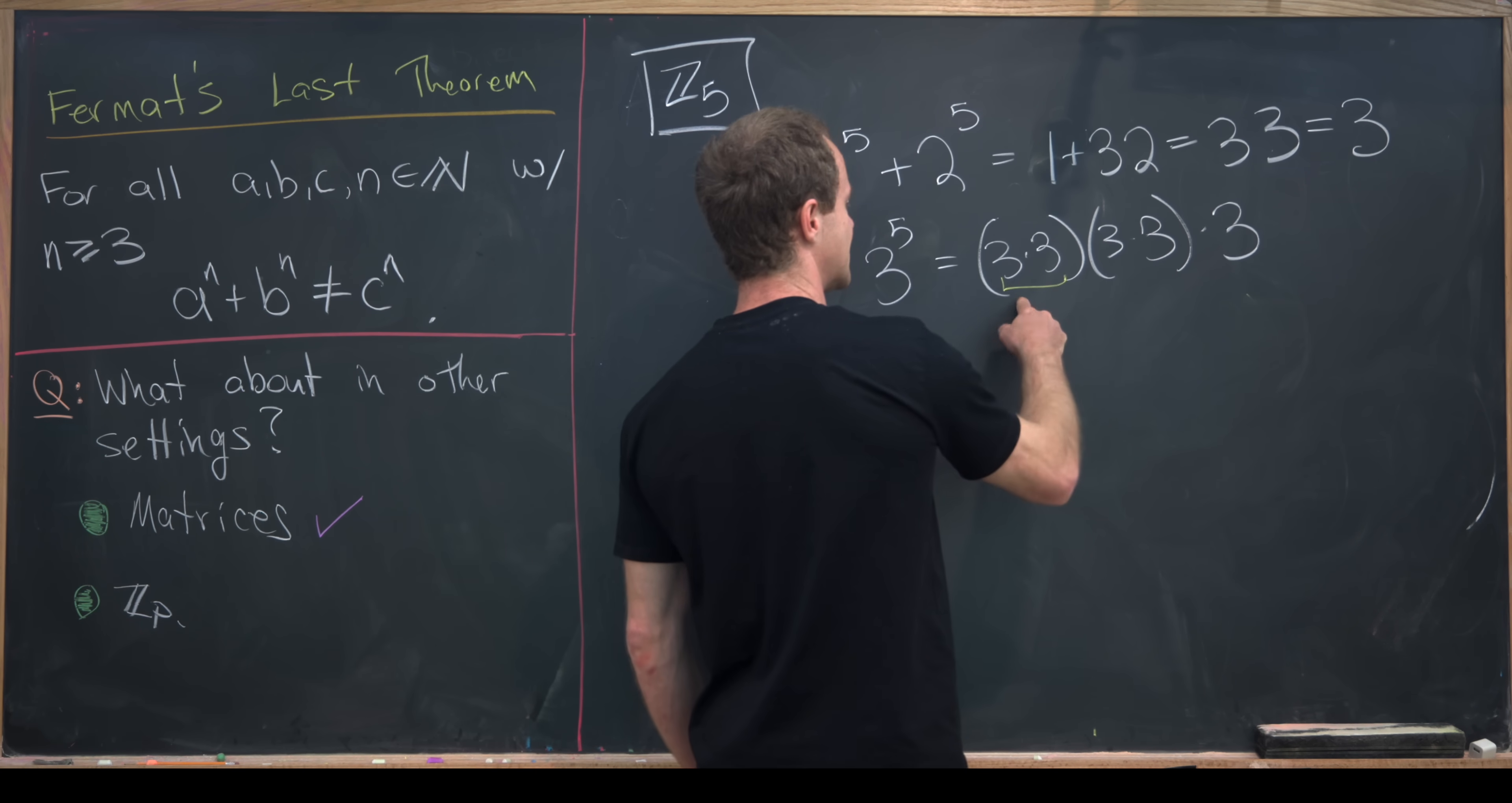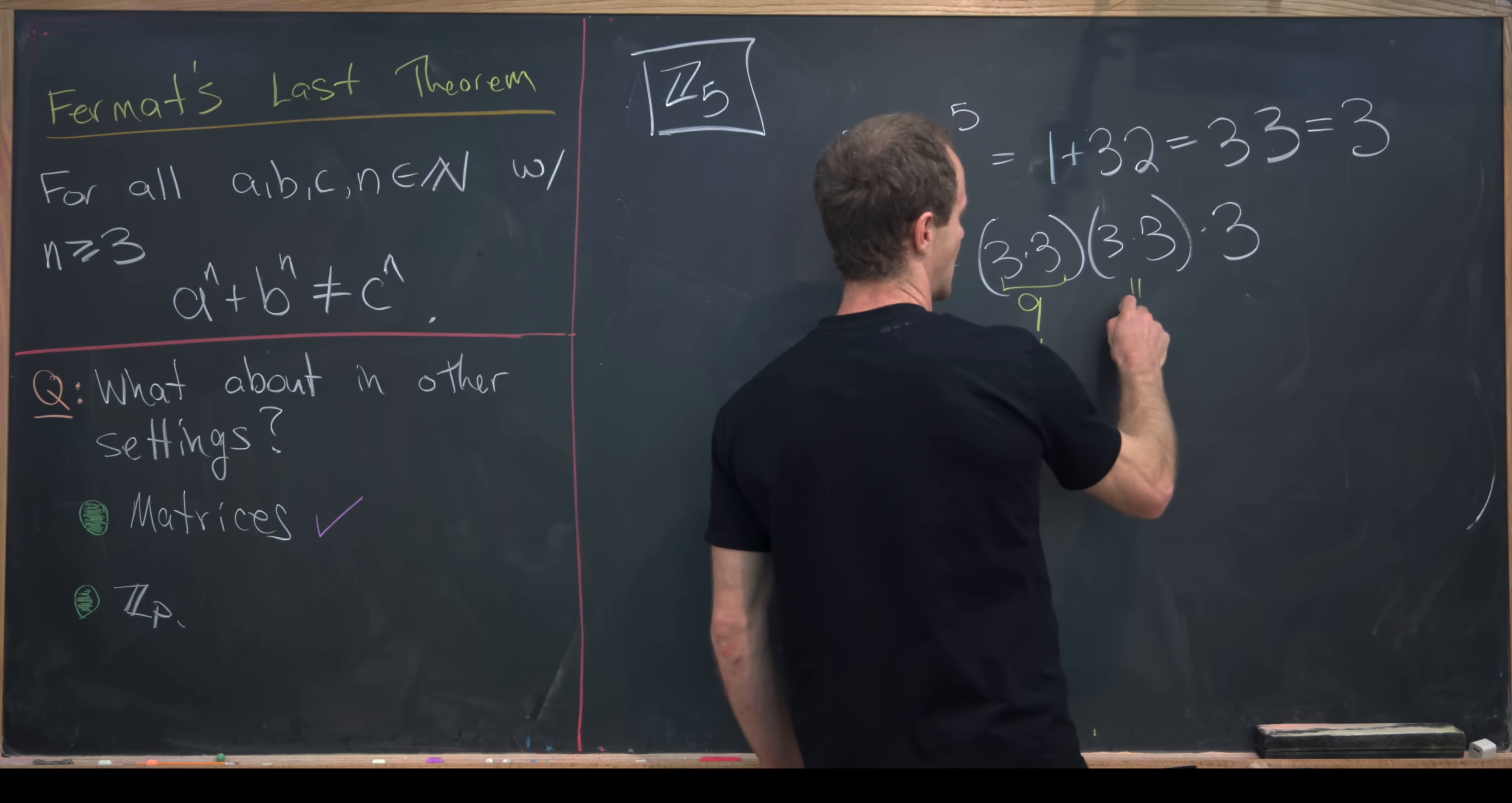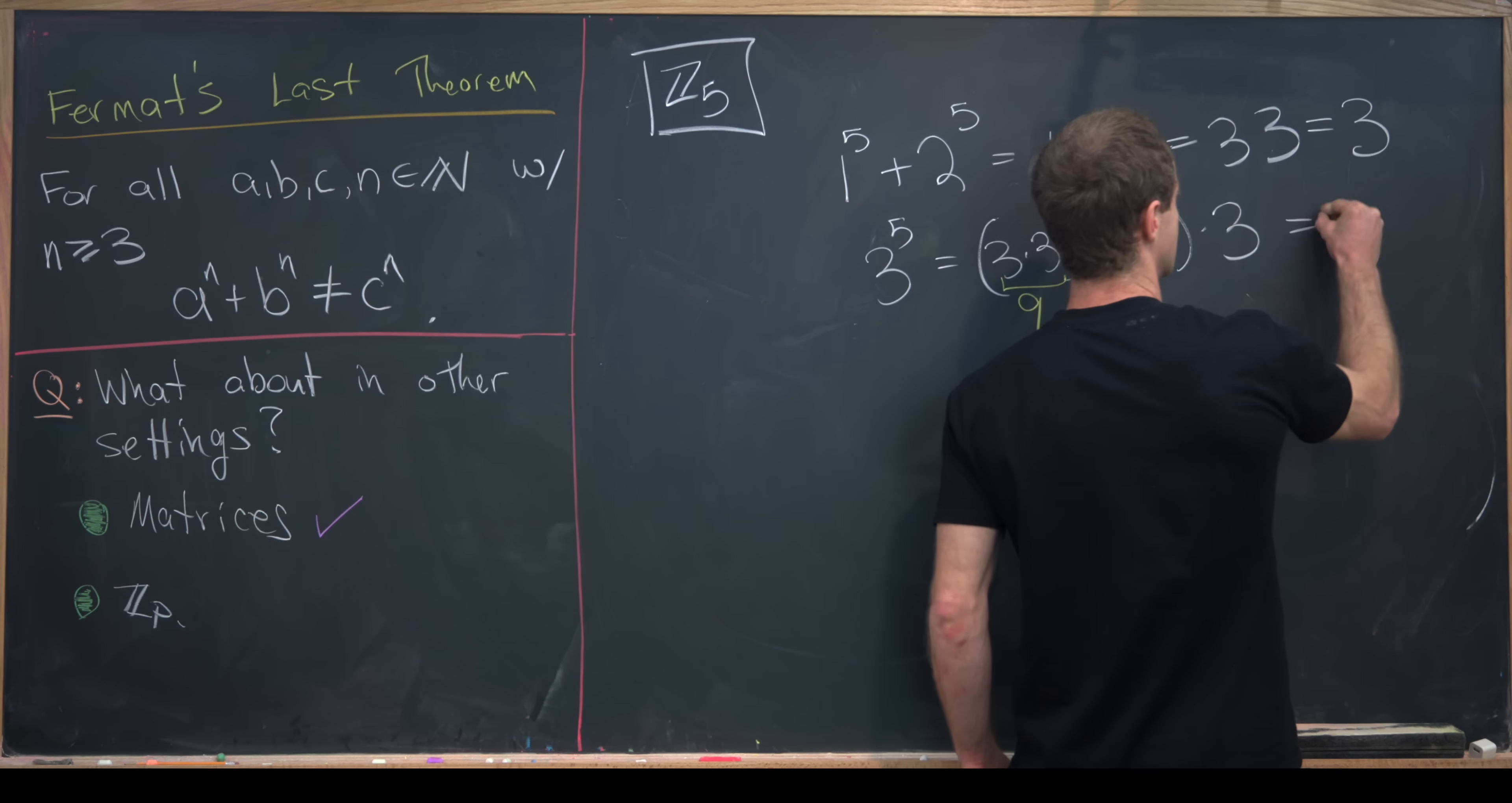So here, notice that 3 times 3 is equal to 9. But inside of Z5, that's equal to minus 1. Likewise, this is equal to minus 1. Well, minus 1 times minus 1 is 1, times 3 is equal to 3.